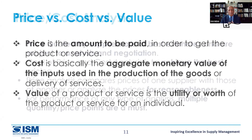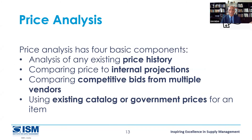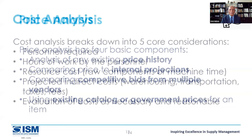Price analysis is the key component. Price is straightforward — comparing offers, looking at past price history, comparing to internal projections. We work backward: can this price be absorbed? Comparing competitive bids, using existing catalogs, and there are some items where the government fixes the price — particularly oil and similar commodities. Cost analysis asks: how much does it cost? How many people work on it, what is each person's rate per hour, hours of work — that is the source cost.